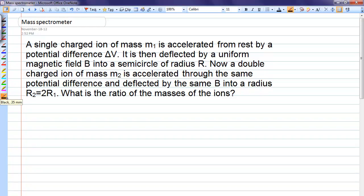This is a problem that is similar to a mass spectrometer. Two things are happening. The charged ion is first being accelerated through a voltage, which gives it its high velocity, and then it enters a magnetic field, which causes it to go in a circular motion.